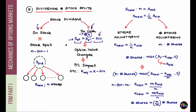Does this cash dividend affect the option? When you price the option — we'll look at pricing models in lesson 12 — the forecasted value of the dividend is already accounted for. If the dividend actually paid differs from that forecasted value, then yes, your option value will change because the true dividend didn't match the forecast. So a cash dividend will have a PnL impact.